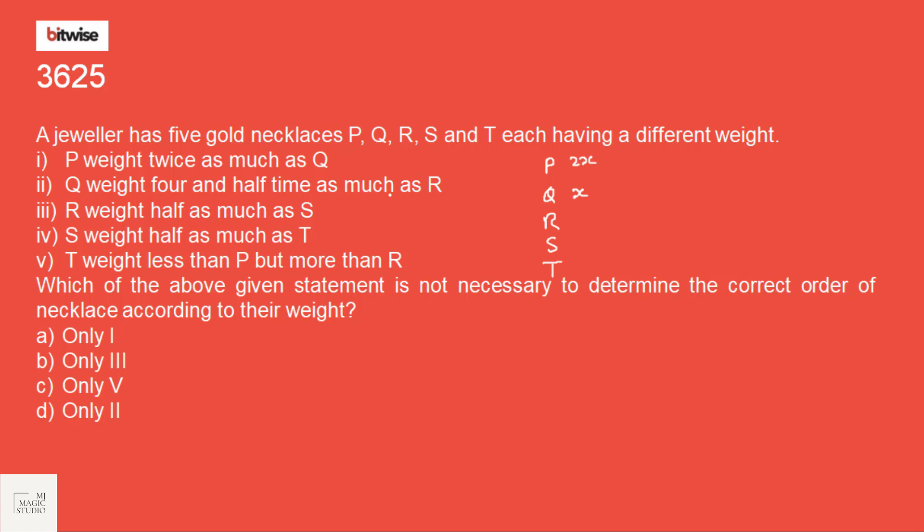Q weights 4.5 times as much as R. So let us take R as X. Then Q is 4.5X. And P is 9X. R weight half as much as S. Weight of R is half of S. That means S is 2X. So we have got weight of 4 till this point. S weight half as much as T. So T weight is 4X. We have got weight of all the 5 till this point.